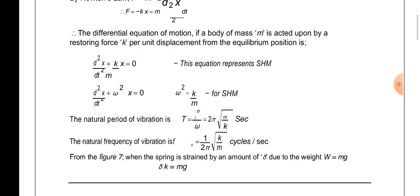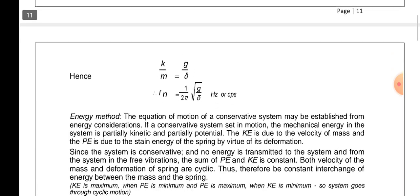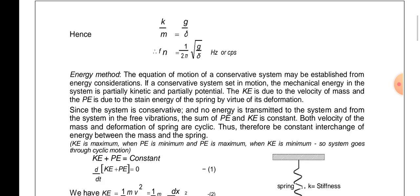The spring is strained by an amount delta (δ) due to the weight W = mg, so δk = mg. Hence, k/m = g/δ. Substituting, the natural frequency fn = 1/(2π) · √(g/δ). This completes the equilibrium method.